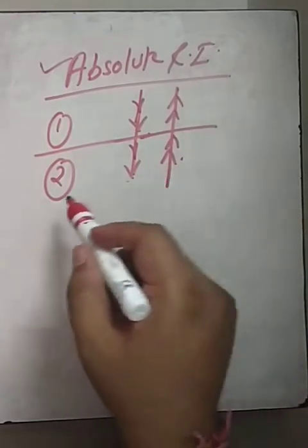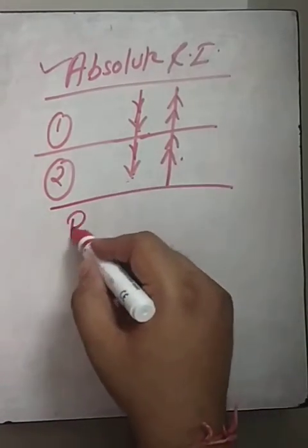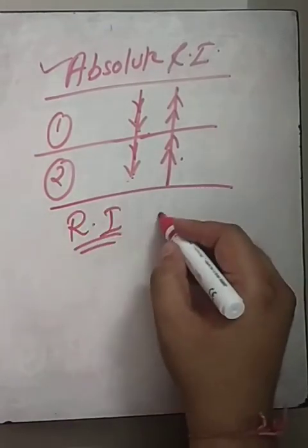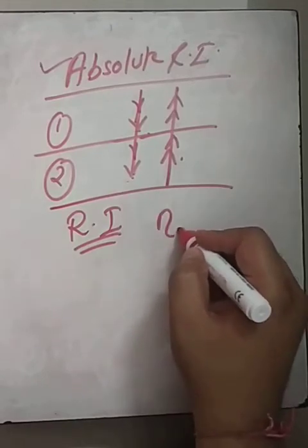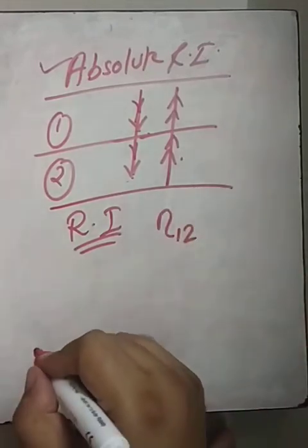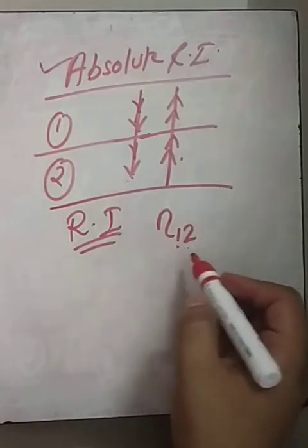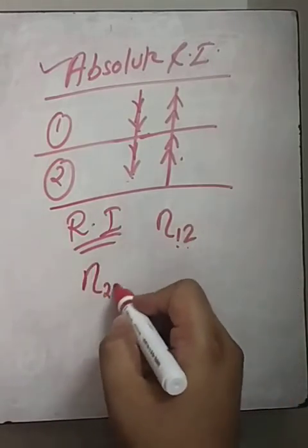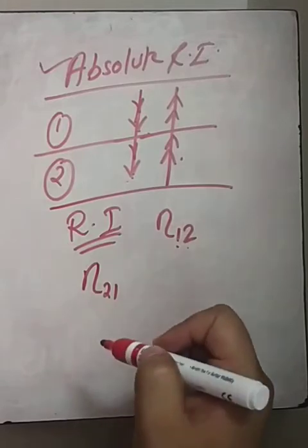So, how do we express the refractive index of medium 1 with respect to medium 2? And similarly, how do we express the refractive index of medium 2 with respect to medium 1?